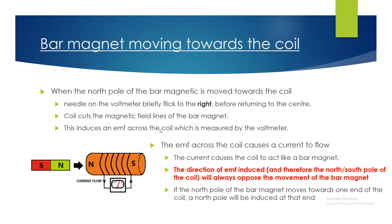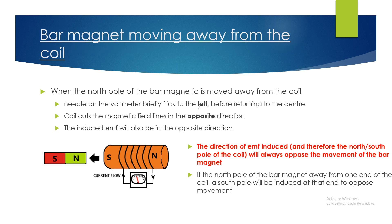The poles formed in the coil always try to oppose the movement of the bar magnet. When the north pole of the bar magnet is moved away from the coil, the needle on the voltmeter briefly flicks to the left — opposite to before. The coil again cuts the magnetic field lines, but now in the opposite direction, so the induced EMF is also reversed. This time, the coil wants to keep the magnet close, so opposite poles attract: a south pole is induced on the left-hand face of the coil, closest to the retreating north pole.